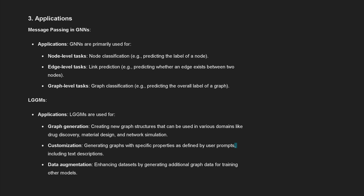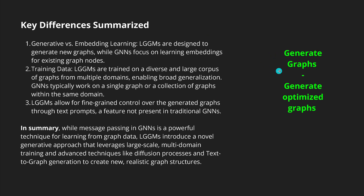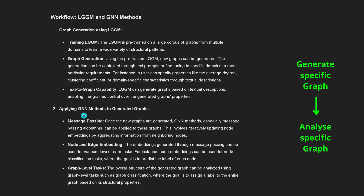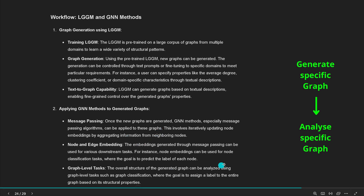With LGGMs, it's a little bit different - what we do is generate new graph structures with given commands that are realistic and adhere to certain properties. The focus is on the generation of graph structures, potentially based on user-defined criteria. The application side differs: GNNs handle the typical node-level, edge-level, and graph-level tasks like graph classification, while with LGGMs we generate graphs with specific properties as defined by user prompts including text descriptions. This enables data augmentation by generating additional graphs or subgraphs for training other models. GNN methods can then be applied to the generated graphs - they work hand in hand.